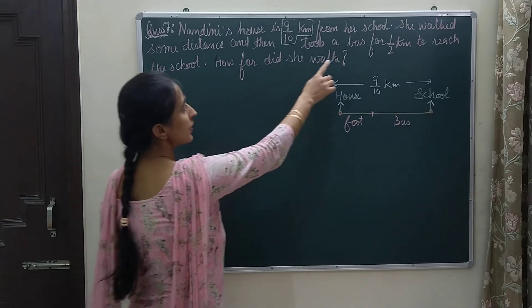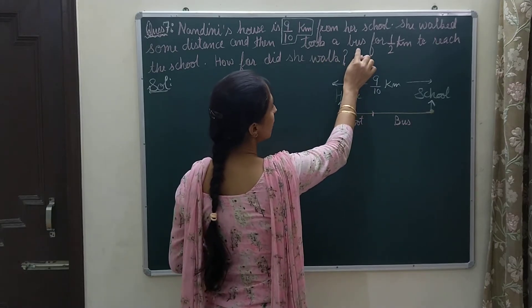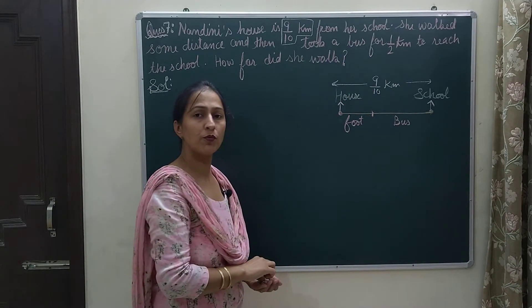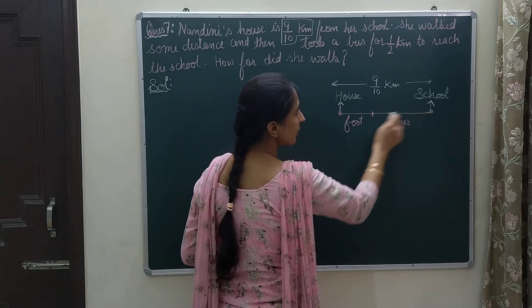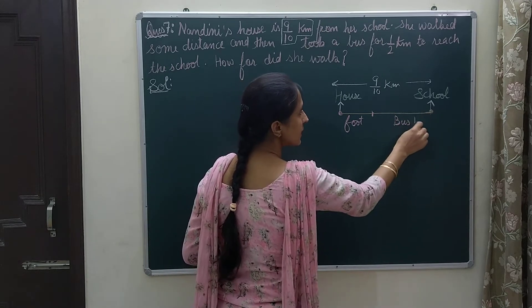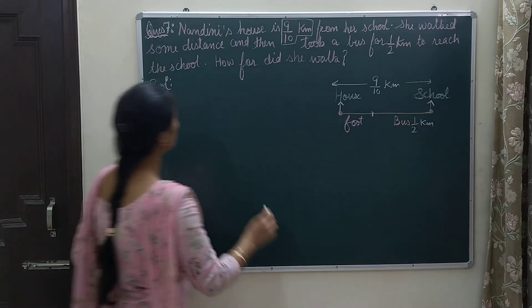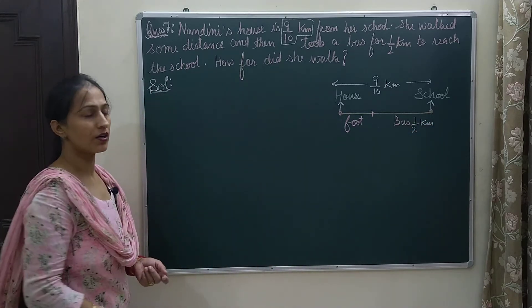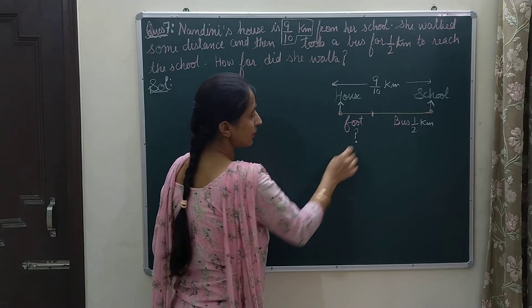We are also given that she took the bus for 1 by 2 kilometers — the distance she covered by bus is 1 by 2 kilometers. The question asks: how far did she walk, that is, how much distance did she travel by foot?